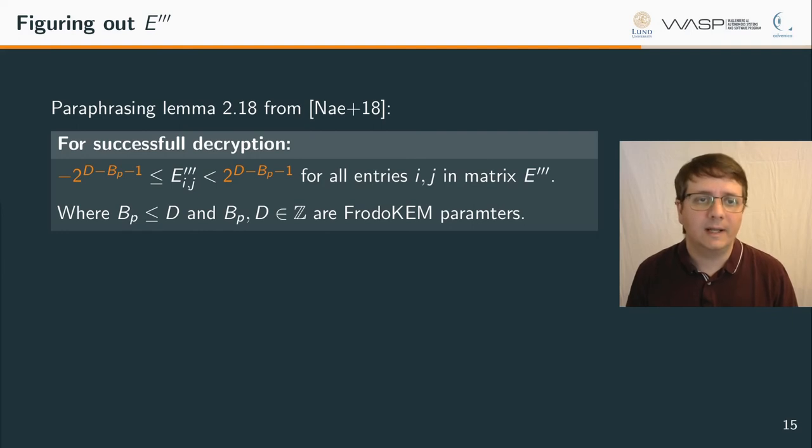Alright, by using a lemma from the FrodoChem specification, we know that the range of values for each entry in the noise matrix that FrodoChem can handle without experiencing a decoding failure. As you can see, I'm going to save some time here by skipping over the details of deriving this range. And the bounds are that each entry of the error matrix must be greater than or equal to minus 2 raised to the power of D minus BP minus 1. Symmetrically, it must also be less than 2 raised to the power of D minus BP minus 1. This means that we can recover each index ij from E triple prime.